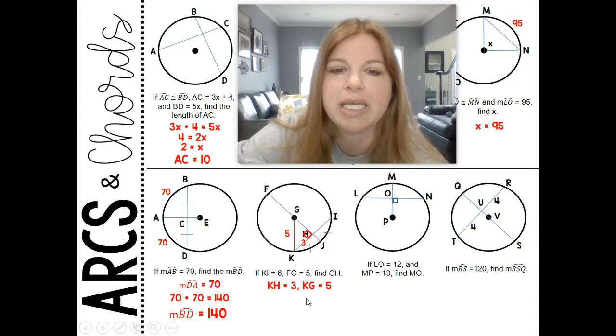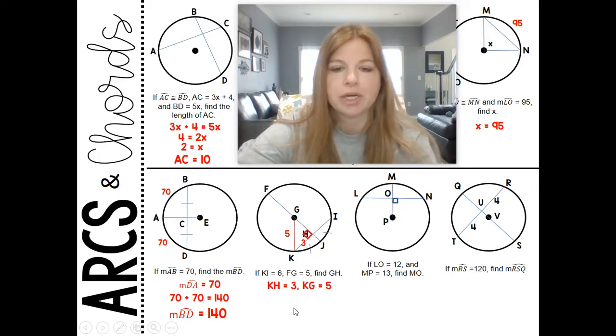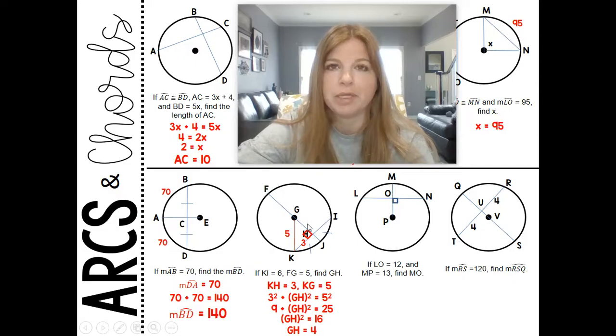So KH is 3, KG is 5, GH would be one of the legs of the right triangle. So 3 squared, a leg, plus GH, or you can give it some other variable like Y, equals 5 squared. 9 plus GH squared is 25, GH squared is 16, and GH would have to be 4. It's one of those beautiful Pythagorean triples: 3, 4, 5.